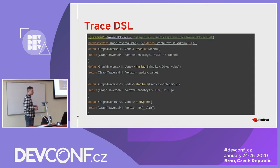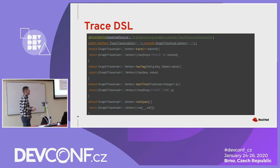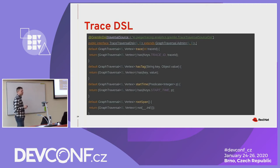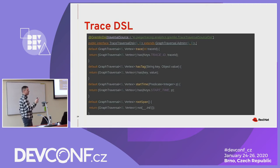When you want to extend Gremlin, you extend two APIs or interfaces. One is graph traversal — for example, the first method says 'get me a trace,' meaning is there a trace with this specific ID in the graph? We call the Gremlin core API, which checks whether a property exists on a vertex and returns that.